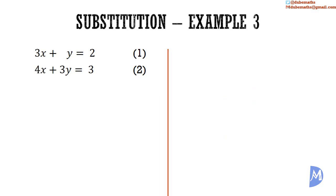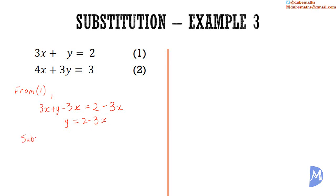Example 3. We have 3x plus y is equal to 2 — equation 1 — and 4x plus 3y is equal to 3 — equation 2. It is easiest to make y the subject of the formula in equation 1. From equation 1, we subtract 3x on both sides: 3x plus y minus 3x is equal to 2 minus 3x. 3x minus 3x is equal to 0, so we get y is equal to 2 minus 3x. Now we substitute y equals 2 minus 3x in equation 2, giving 4x plus 3 multiplied by (2 minus 3x) is equal to 3.